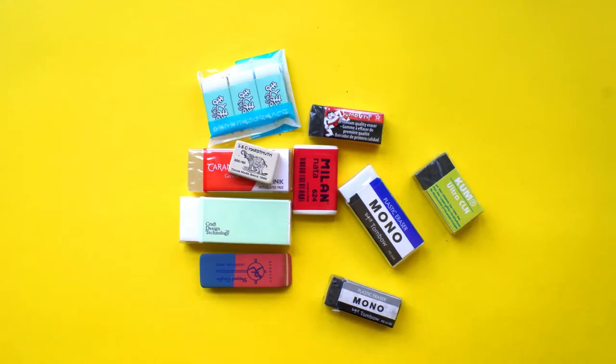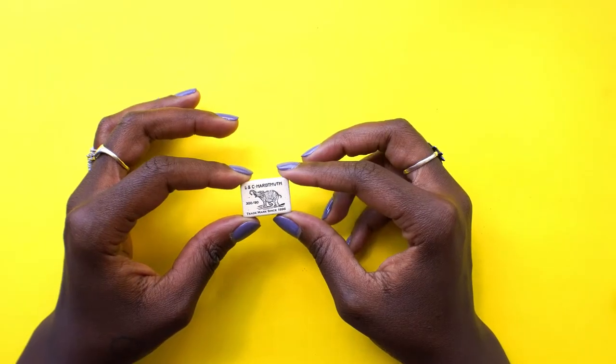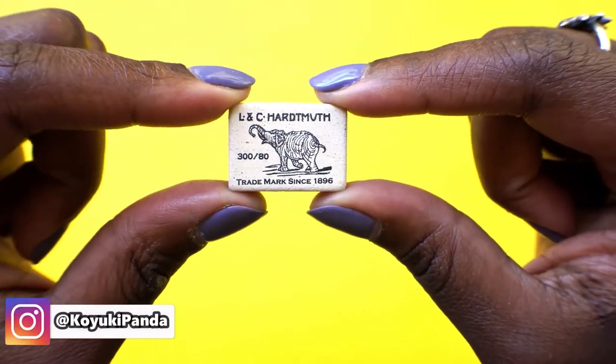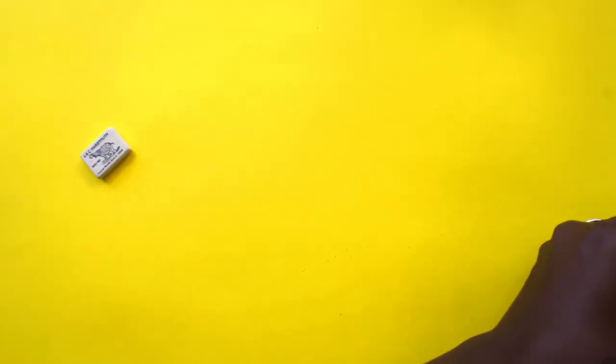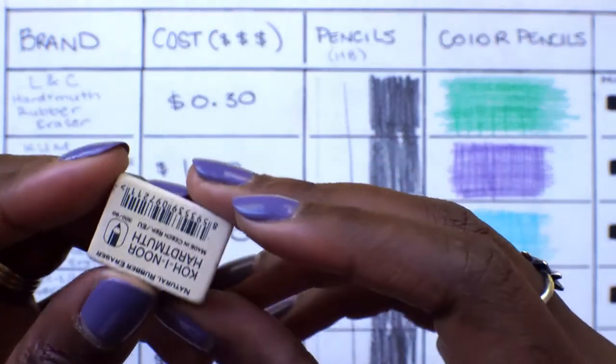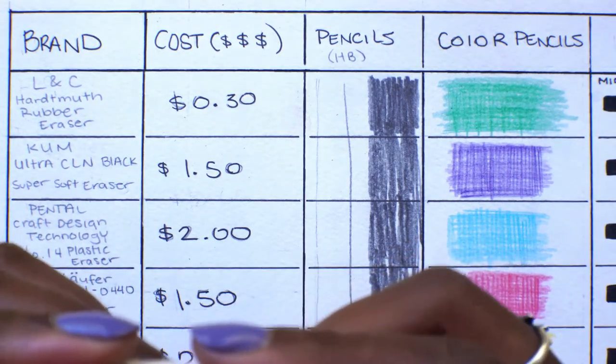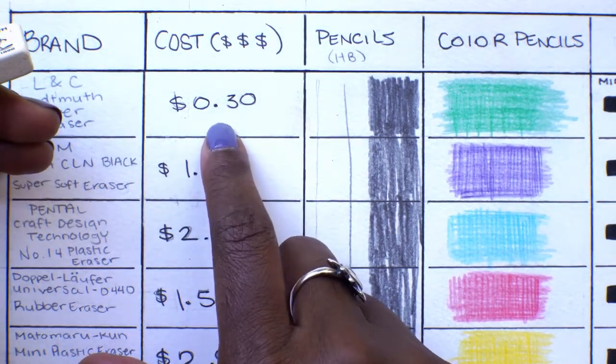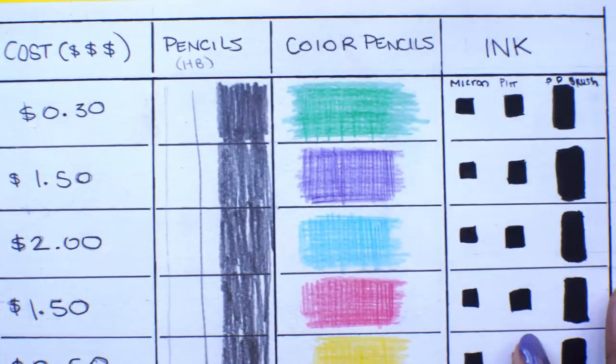The first eraser is the LNC Hearth Moon Eraser. It's a rubber eraser. I probably should've Googled how to pronounce some of these erasers, because these are not all American brands. Some of them are like German, Japanese. I should've probably Googled how to say some of these. So, for the LNC, this eraser is, it's kind of firm. It's very cute. It's very small. This eraser was just 30 cents. This is the CW Pencil Enterprise price. On to the test.